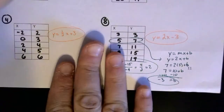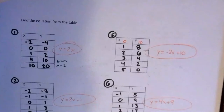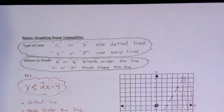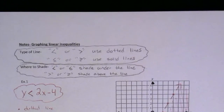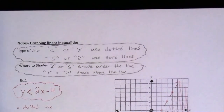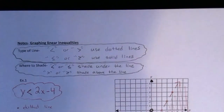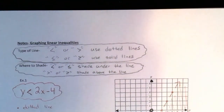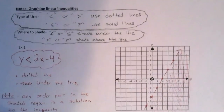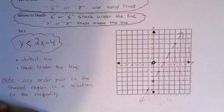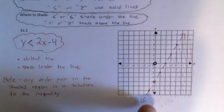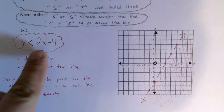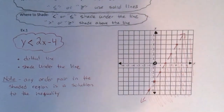Let's move on to today's notes, which are on page 12 in your packet. It seems like it's going to be harder but it's really not too bad. On page 12 we have notes on graphing linear inequalities instead of linear equations. Here we'd graph the inequality y is less than 2x minus 4.